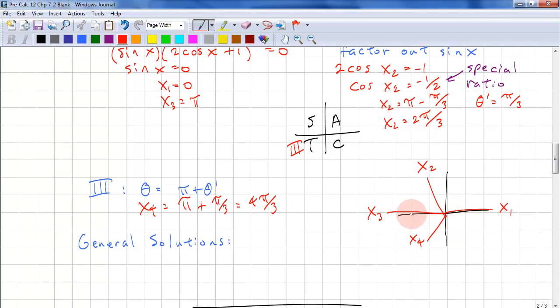Now x1 and x3 work out to one general solution because we're offset by pi and offset by pi again. So our solution is pi n. We have 2 pi over 3 plus 2 pi n. And we have 4 pi over 3 plus 2 pi n. And n from the set of integers. So we have a 0 plus pi n. But we don't need to add 0 plus because that's implied.